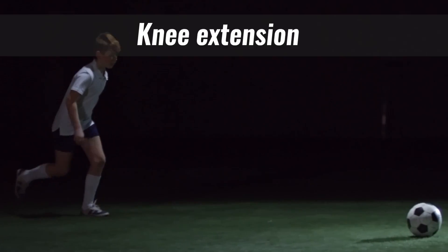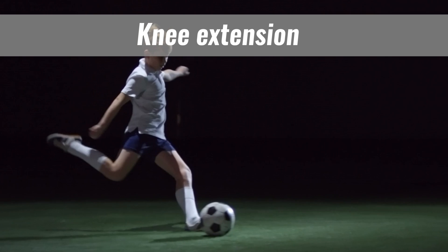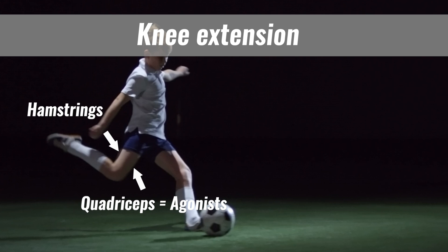Let's take another example. Kicking a football involves the knee extending or straightening. The main muscle group which extends the knee are the quadriceps. So in this case, the quadriceps muscles are considered to be the agonists. At the back of the thigh, the hamstring muscle group will lengthen and relax. Therefore, the hamstring group are the antagonists.